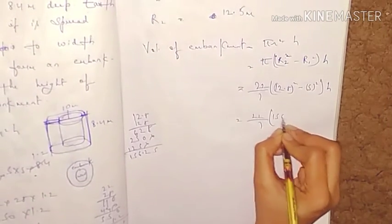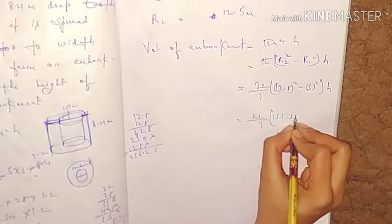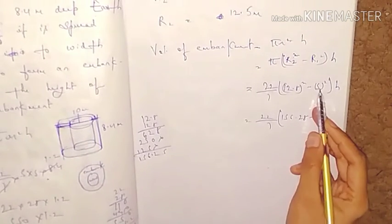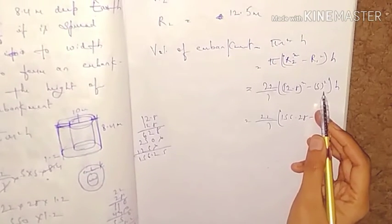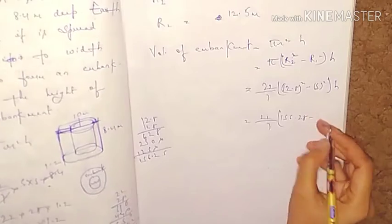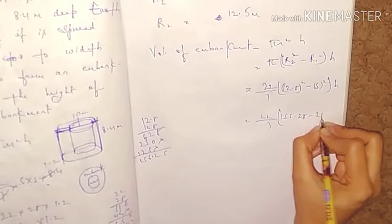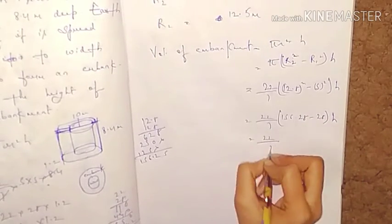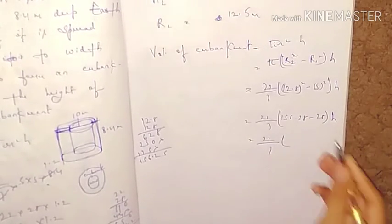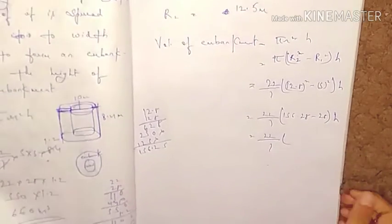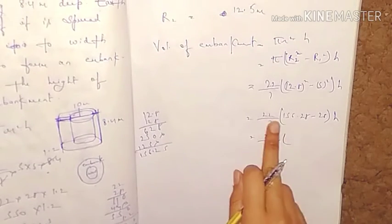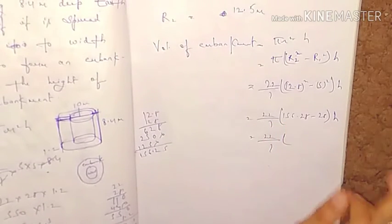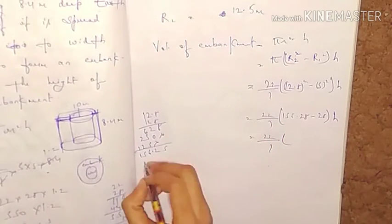12.5 squared is 156.25. Then 5 squared is 25. So 156.25 minus 25 equals 131.25. Therefore the expression becomes 22/7 × 131.25 × h.